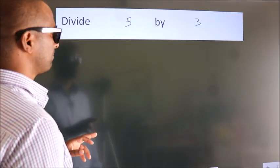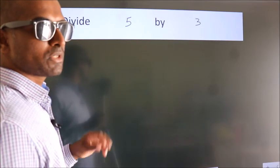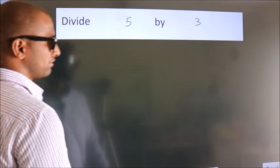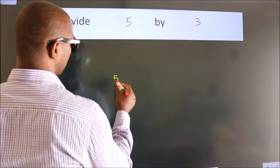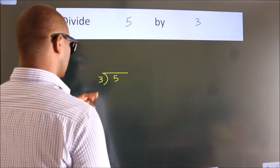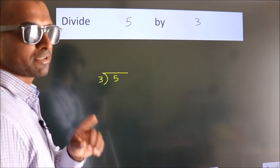Divide 5 by 3. To do this division, we should frame it in this way: 5 here, 3 here. This is your step 1.